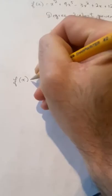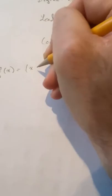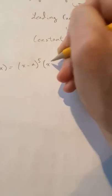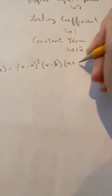So if you have it in intercept form, let's do a generic one. I'm not going to actually plug in specific numbers. We'll do like a, b, and c. So if we have, let's say we have x minus a to the fifth times x minus b times x plus c squared.